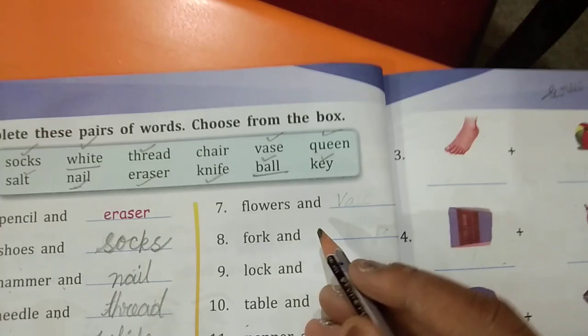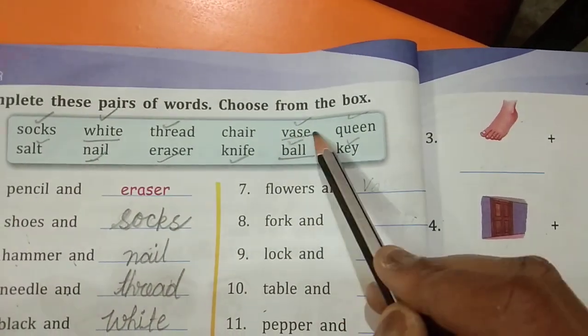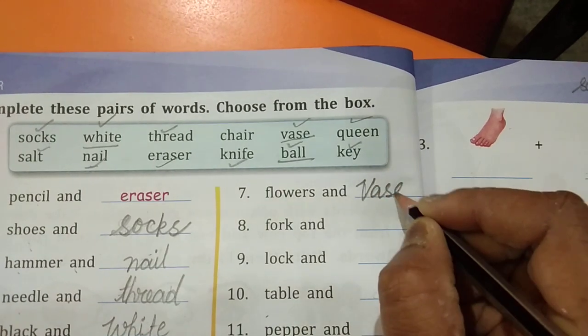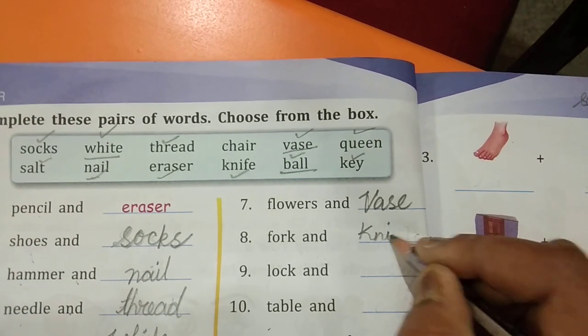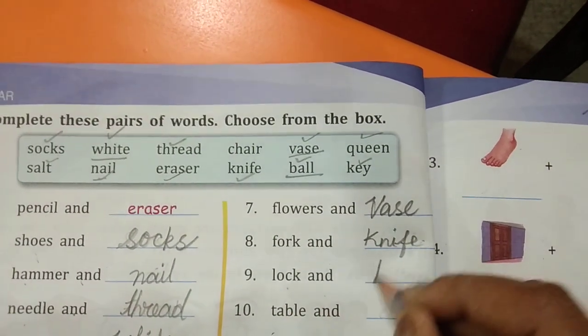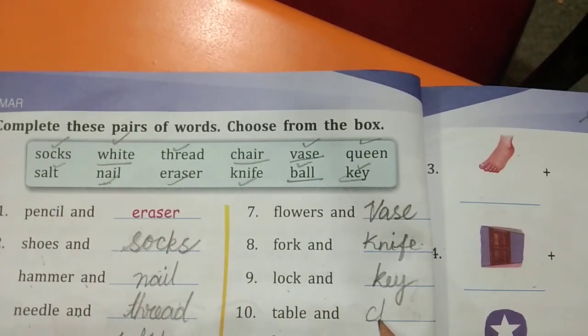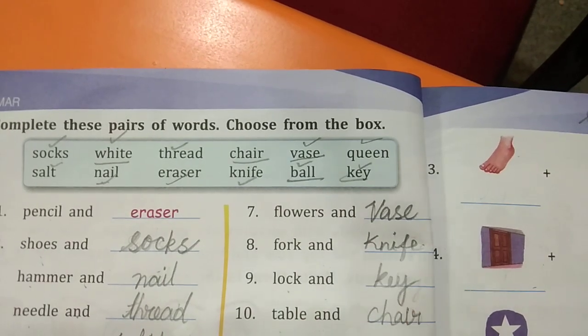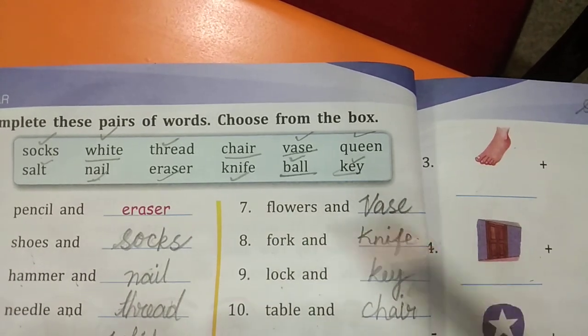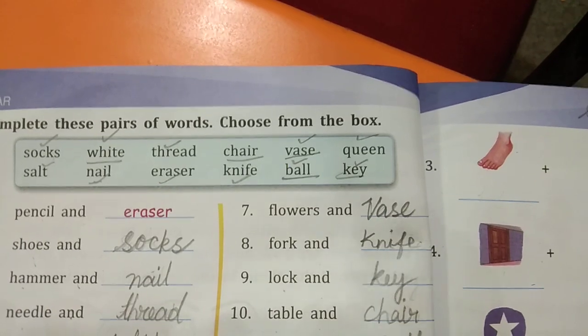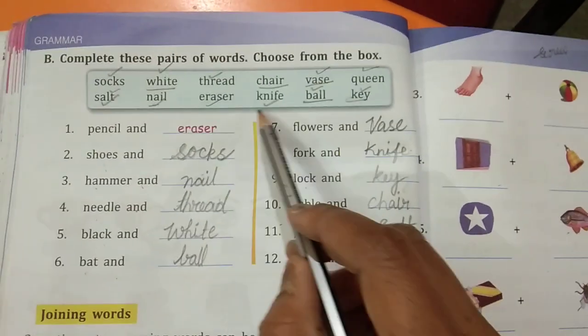Flower and vase. See here, vase. Fork and knife. Lock and key. Table and chair. Pepper and salt. Next, king and queen.